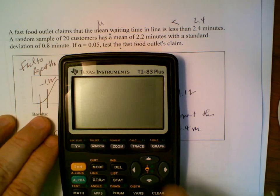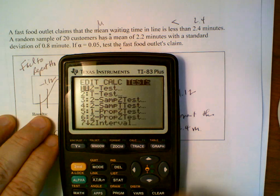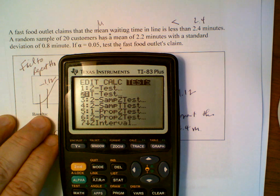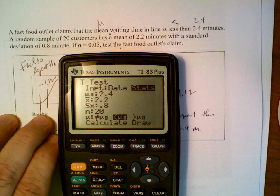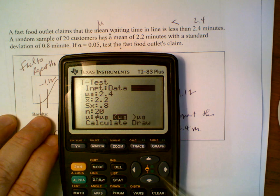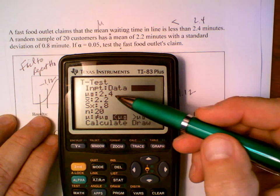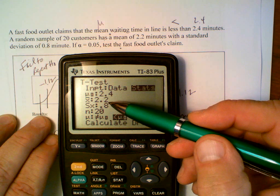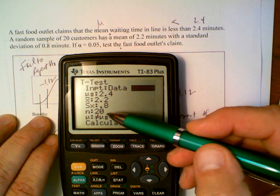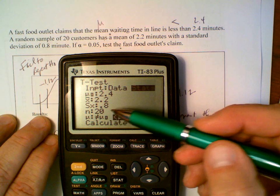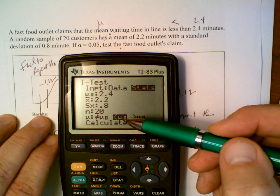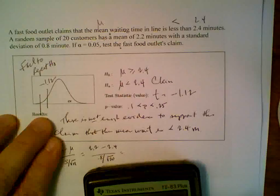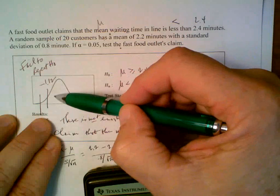Stat tests. This is a t-test. And here we go. The data are already in there. The null hypothesis is 2.4 minutes. The alternate hypothesis is 2.2, 0.8, 20 in the sample. It is a left tail test.